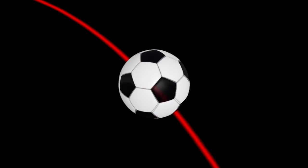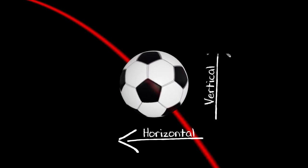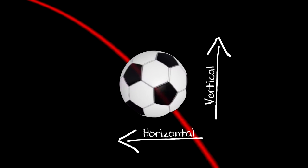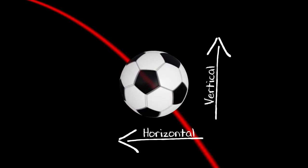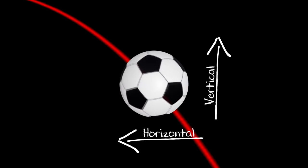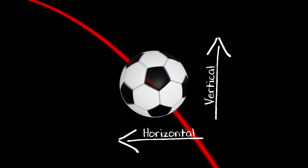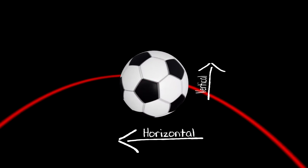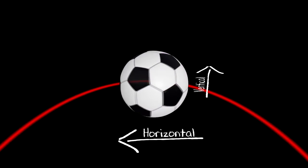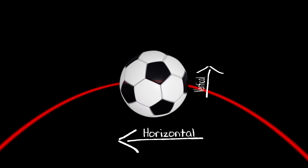When the ball is in mid-air, there are two forces acting upon its direction. These forces are called vectors. The first vector controls the horizontal direction of the ball, while the second controls the vertical direction. When the ball reaches the parabola's vertex, the vertical vector will equal zero.